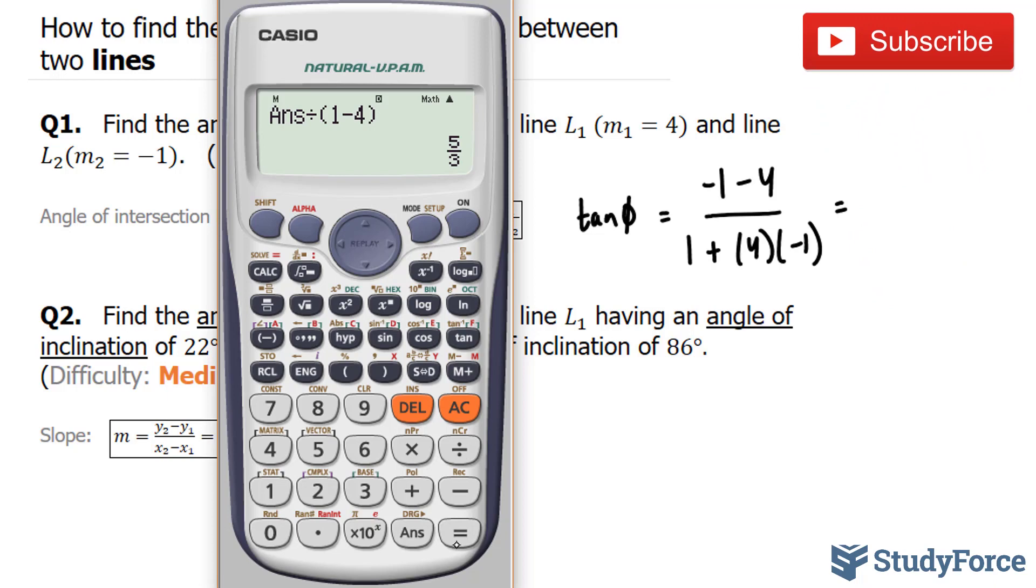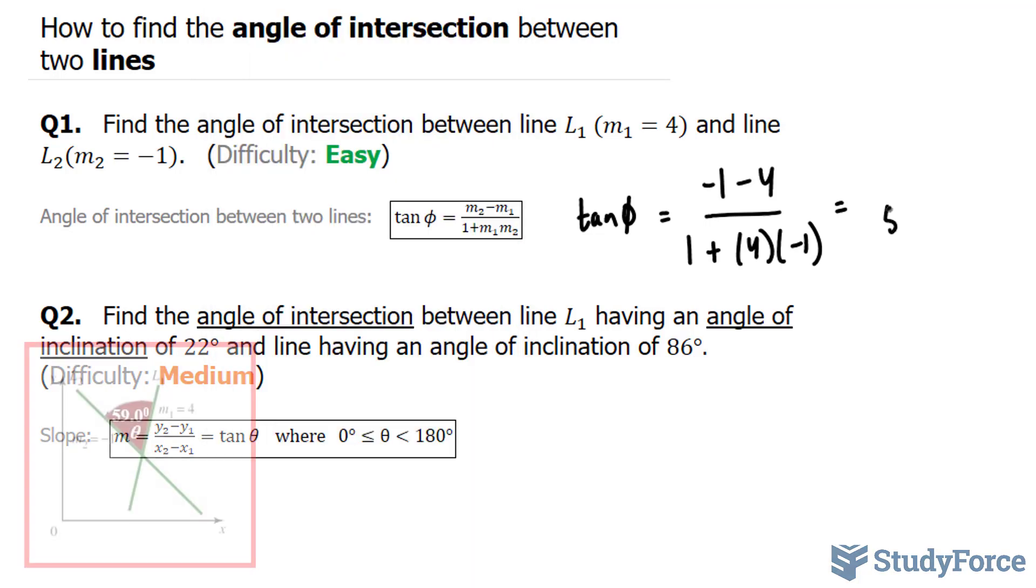Now, to find out what phi is, we need to use inverse tangent, and we can access that by clicking shift, tangent. The answer is 59 degrees. So these two lines are separated by approximately 59 degrees.